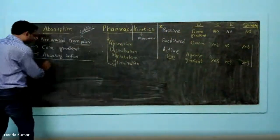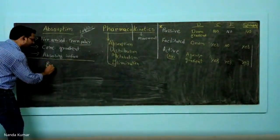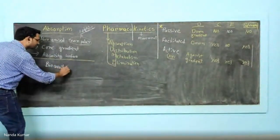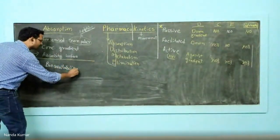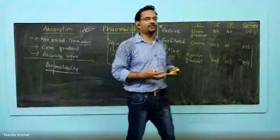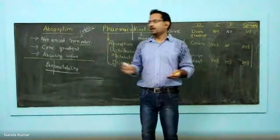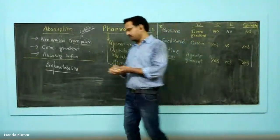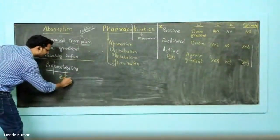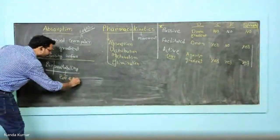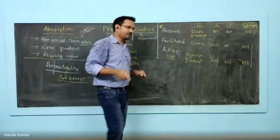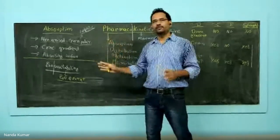We have two different terms. The first term is bioavailability. Bio means living organism, and availability means how much is available. Bioavailability is related to drug absorption — specifically, the rate and extent of the drug that is absorbed into systemic circulation is known as bioavailability.